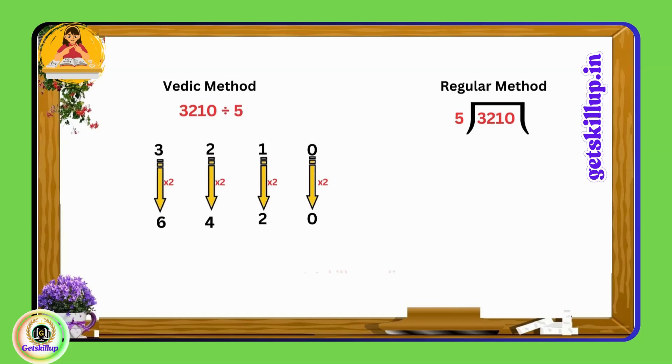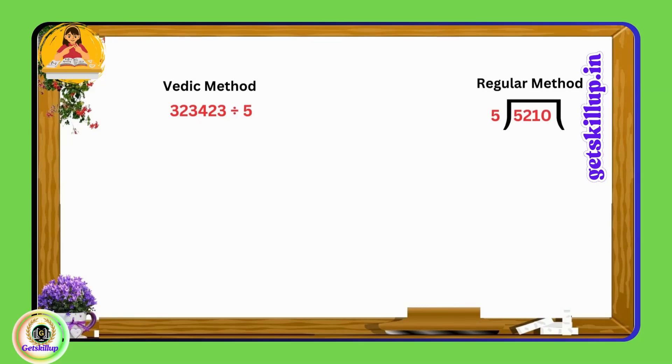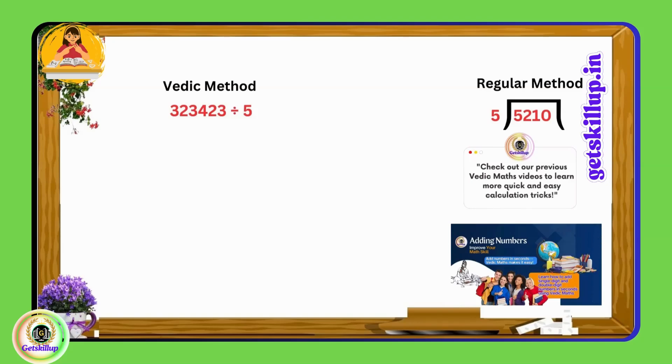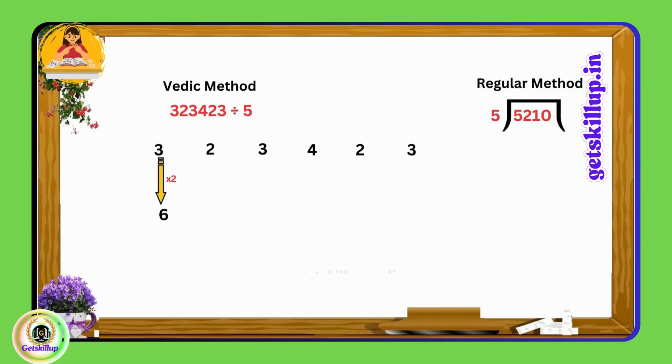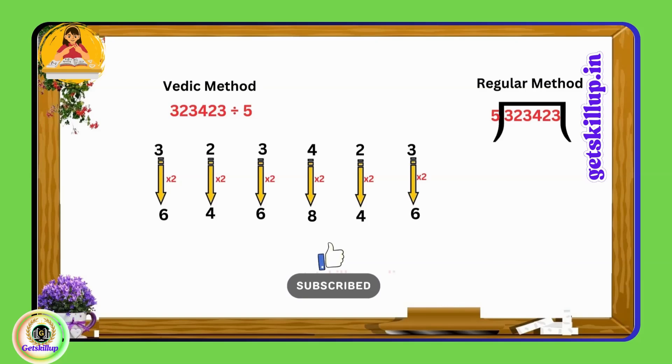Let us take one more number: 323423. We start by doubling each digit, so for the digit 3 we double it to get 6, for 2 we get 4 when doubled. Similarly, 3 becomes 6 and 4 becomes 8, 2 becomes 4 and 3 becomes 6 when we doubled.